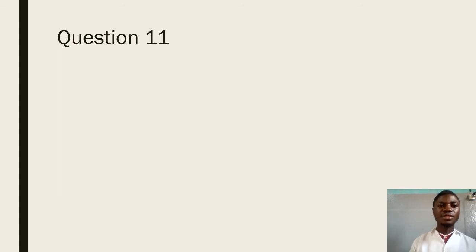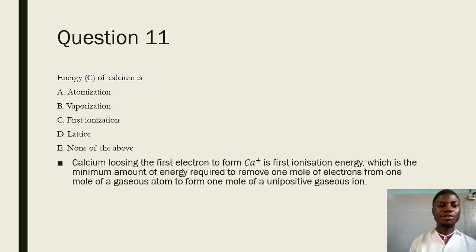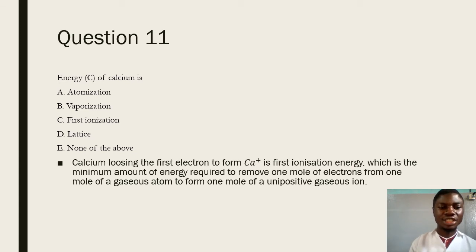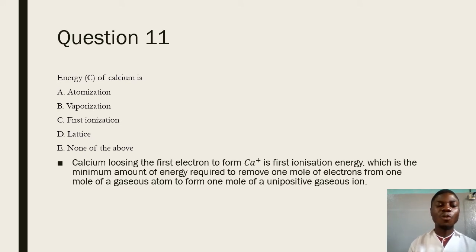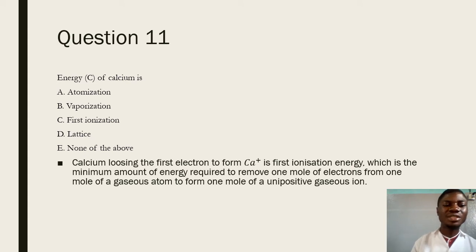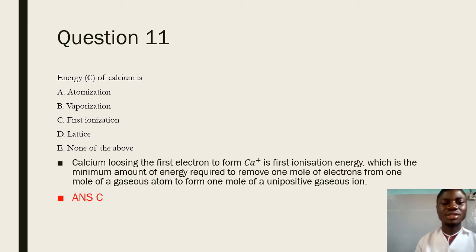Question 11 says: energy C of calcium. From the balanced chemical equation, calcium is losing its first electron to form a calcium ion. This is known as the first ionization energy, which is the minimum amount of energy required to remove one mole of electrons from one mole of a gaseous atom to form one mole of a unipositive gaseous ion. The answer is C.